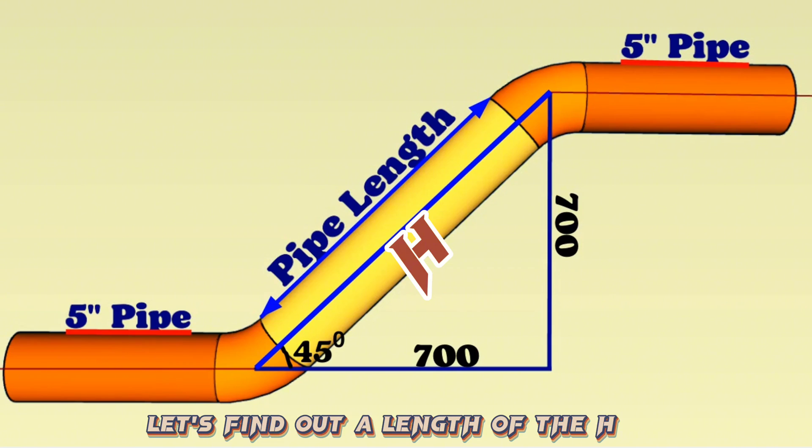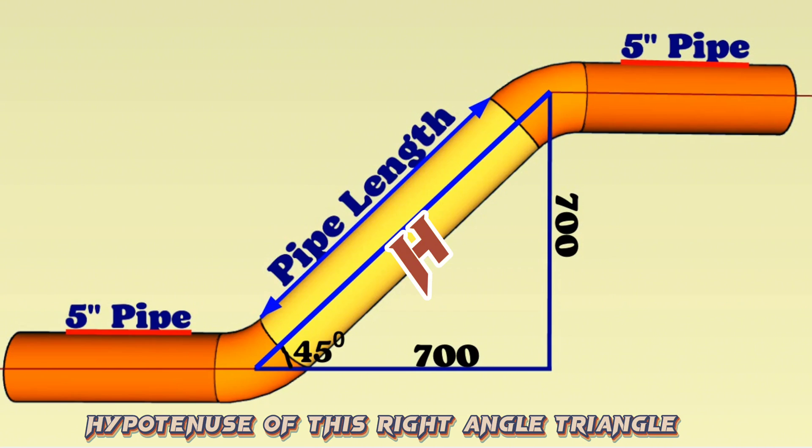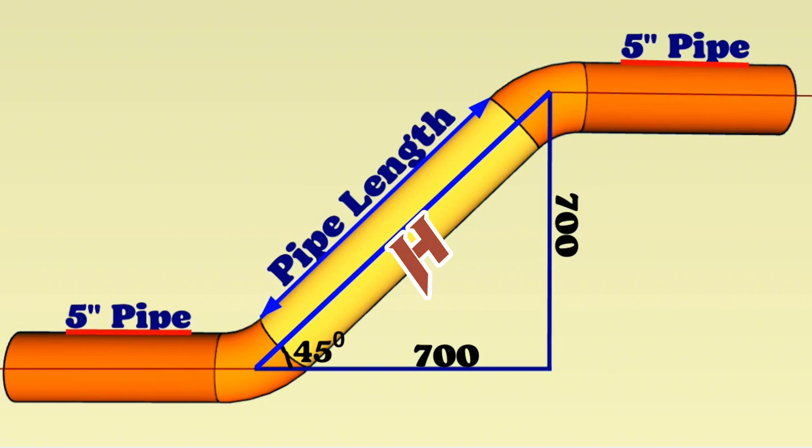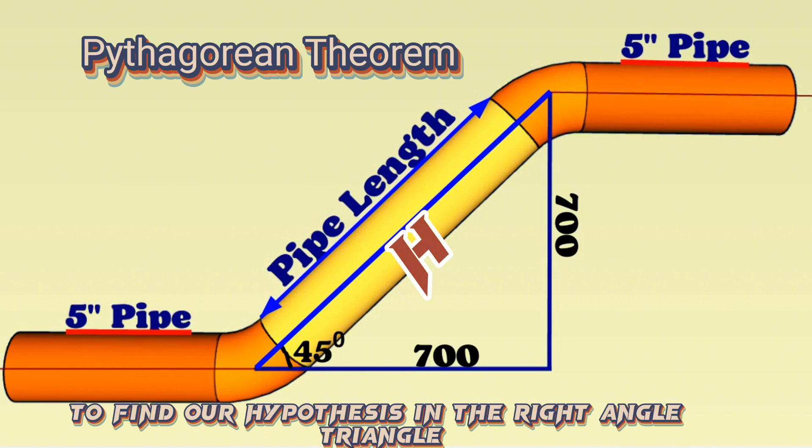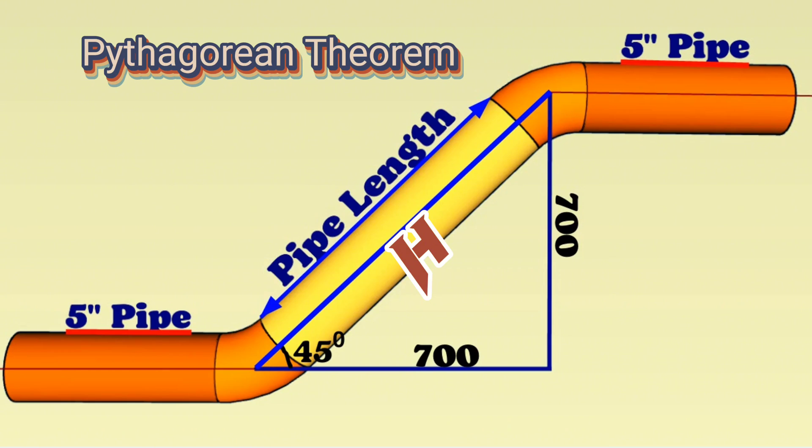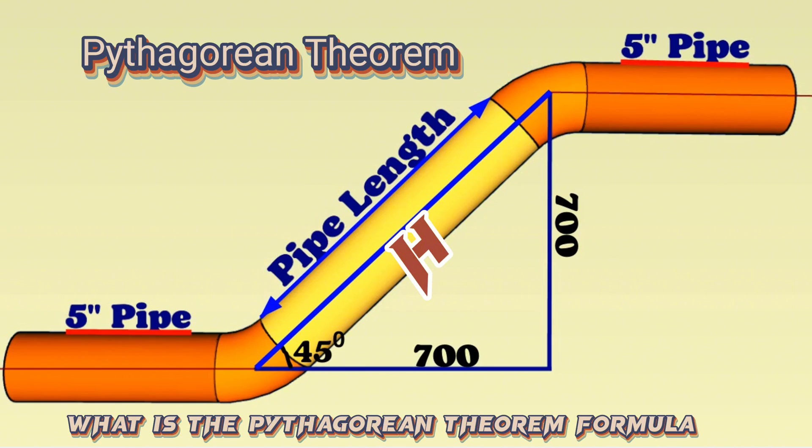Let's find out the length of the H-hypotenuse of this right-angle triangle. We will use the Pythagorean theorem formula to find our hypotenuse in the right-angle triangle.